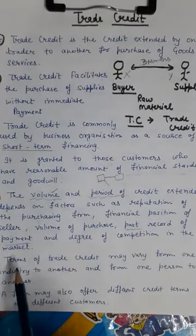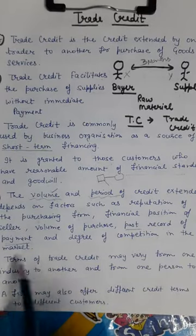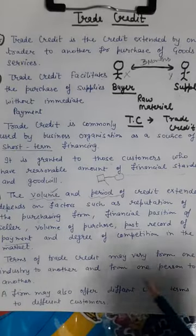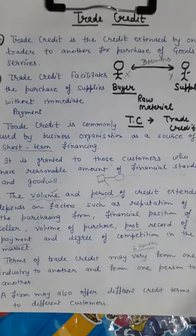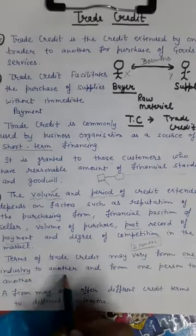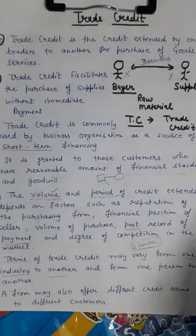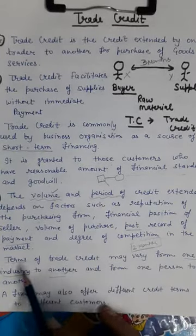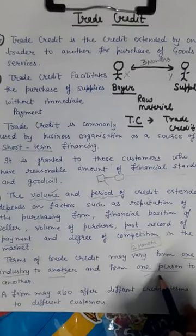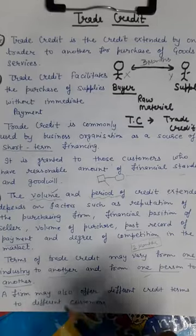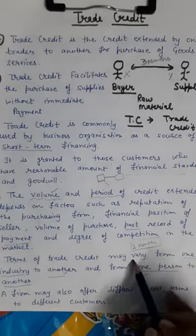Volume and period will always depend on many factors such as: reputation in the market, financial position, volume of purchases, past payment record, and degree of competition in the market. The terms of trade credit may vary from one industry to another and from one person to another. Trade credit terms are not rigid — one industry may be given 2 months to pay, while another may be required to pay within 1 month.